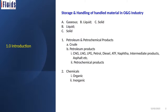Refineries or any hydrocarbon facilities in oil and gas basically handle gaseous, liquid, and solid criteria. Petroleum and petrochemical products consist of crude and petroleum products like CNG (compressed natural gas), LNG, LPG, wet hole, and other things including asphalt. Under petrochemicals there is a wide spectrum of chemicals. Refineries and oil-producing wells also handle organic and inorganic chemicals.